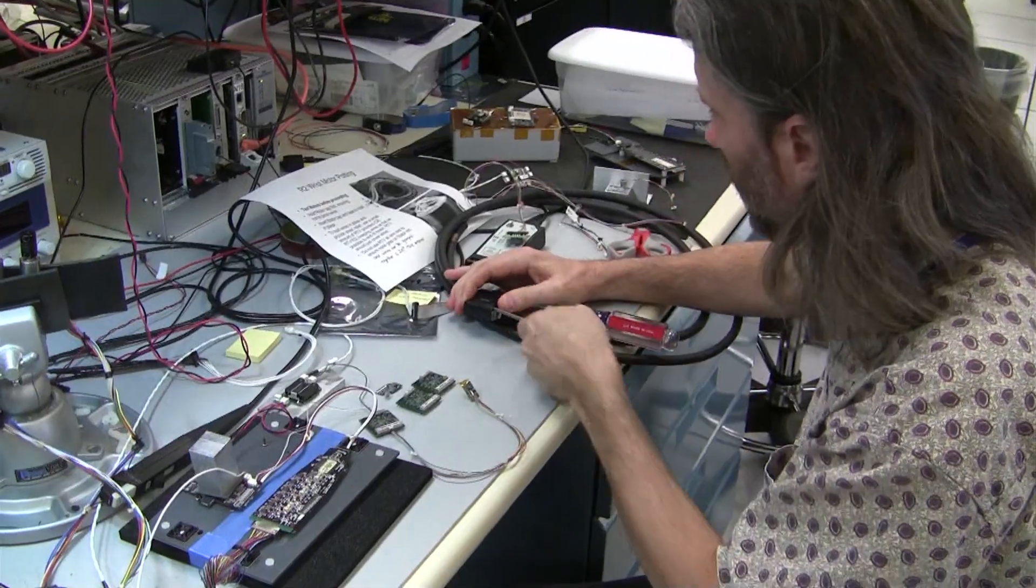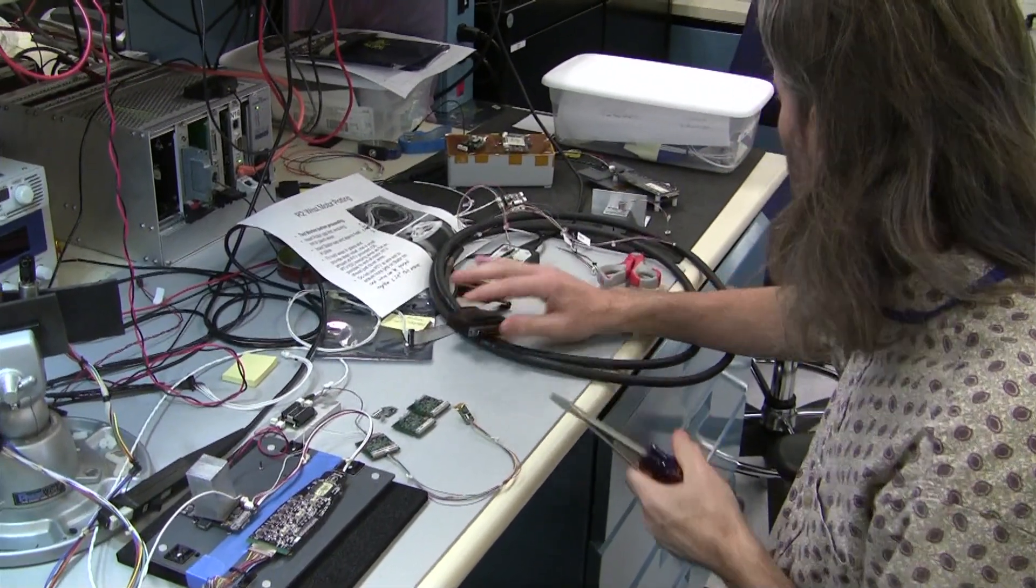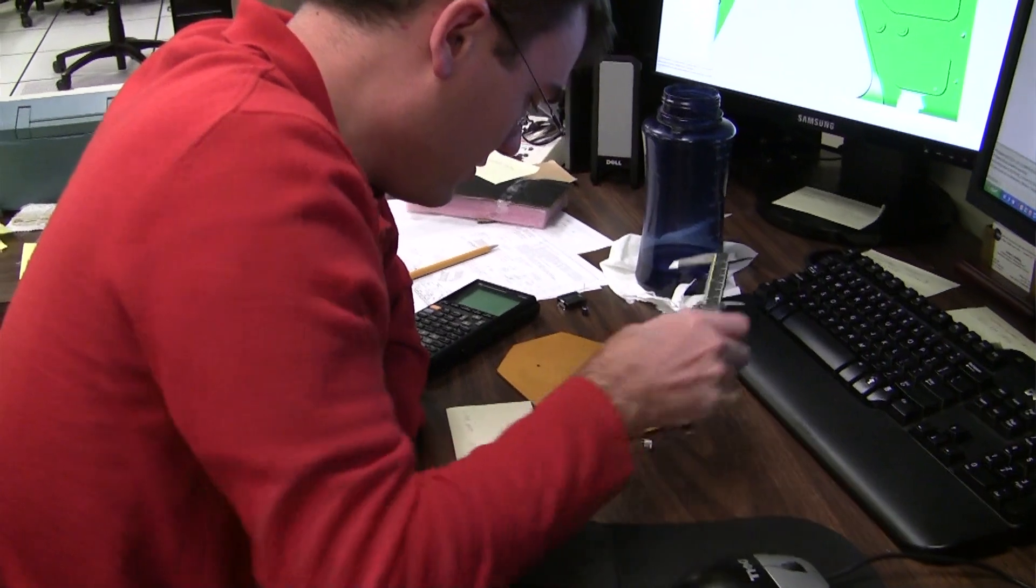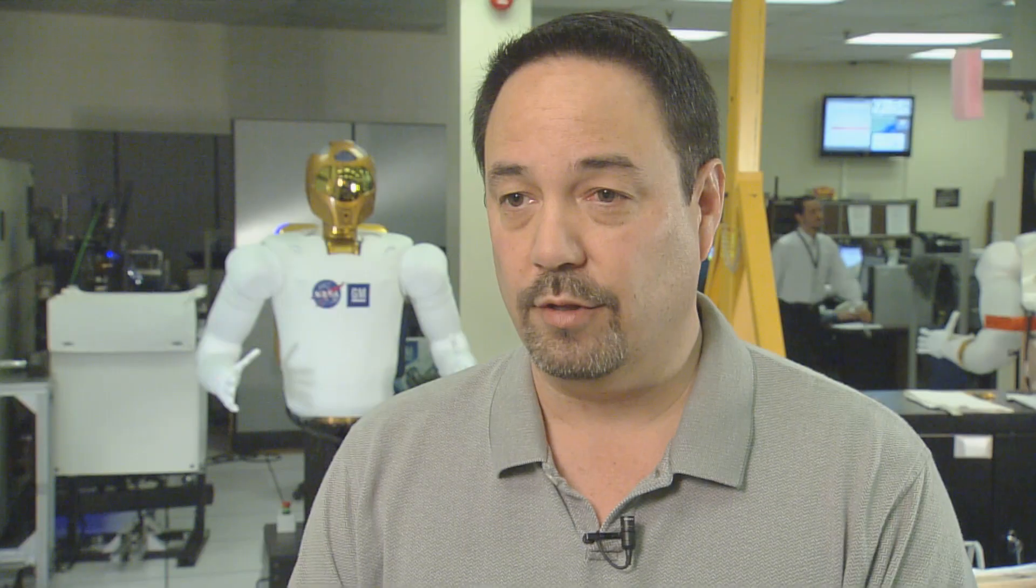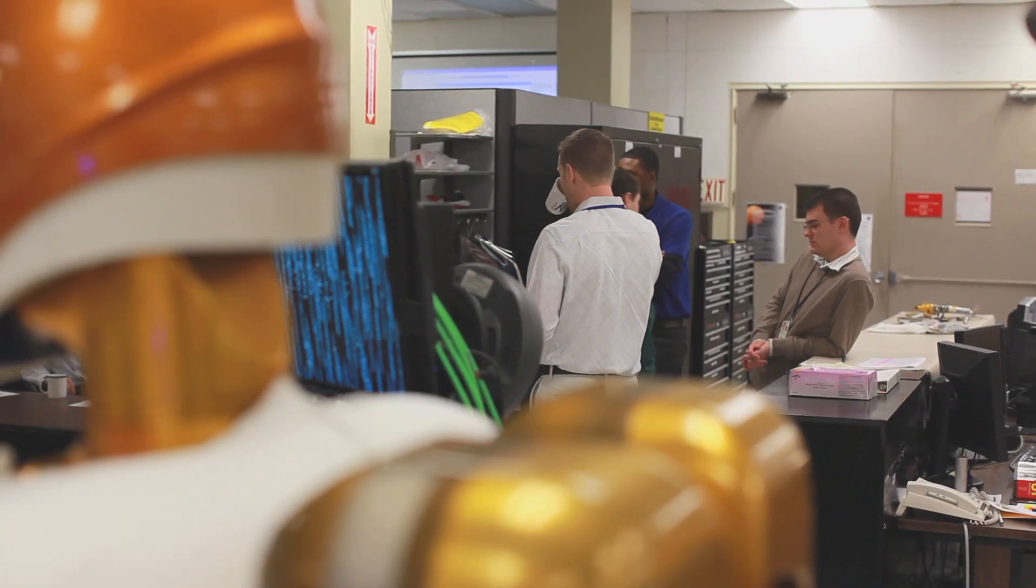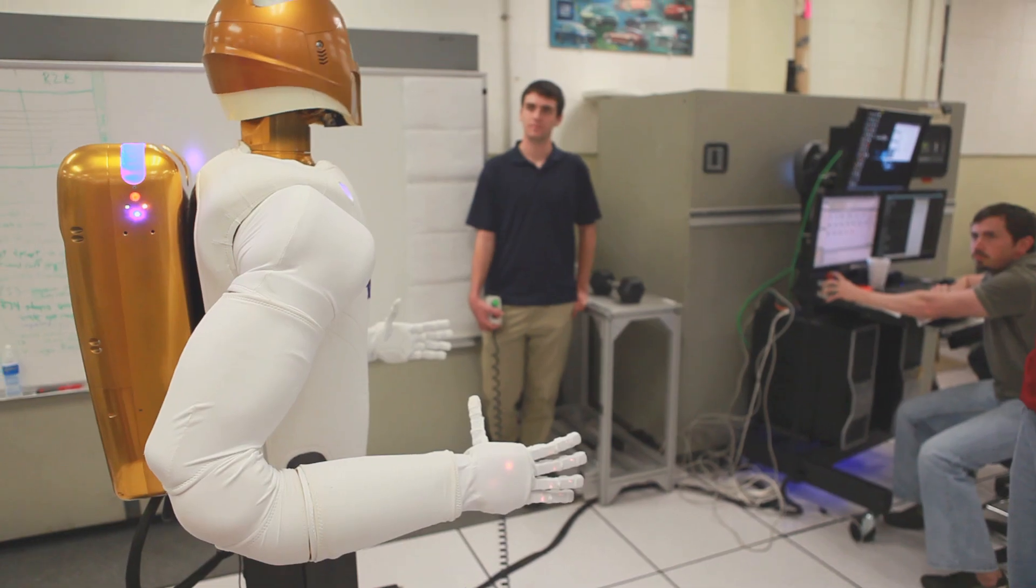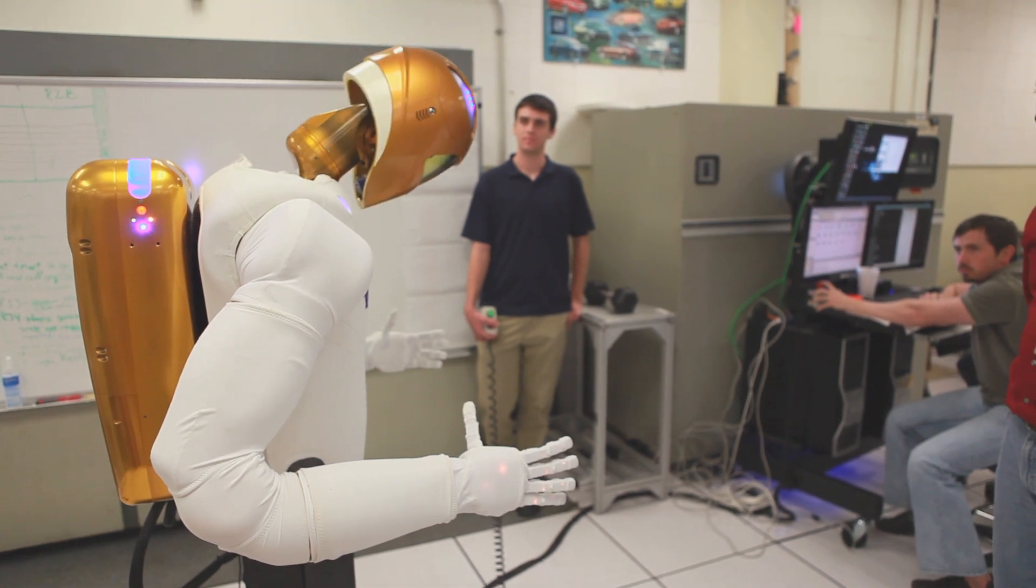The current Robonaut was developed as a result of a partnership between the NASA Johnson Space Center and General Motors. General Motors sent down a team of engineers to work side by side with the NASA engineers developing, assembling, designing and building the current model of Robonaut R2.